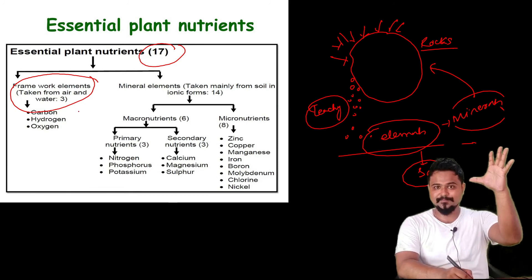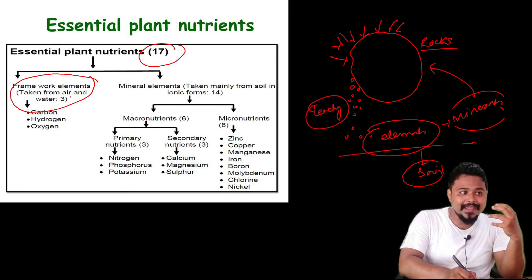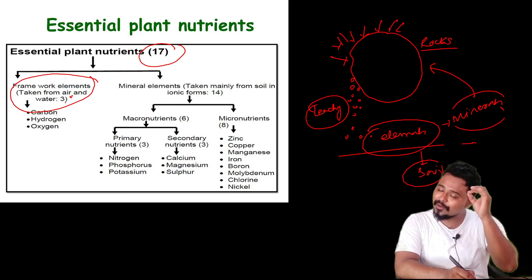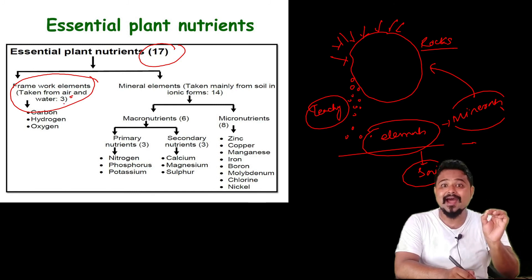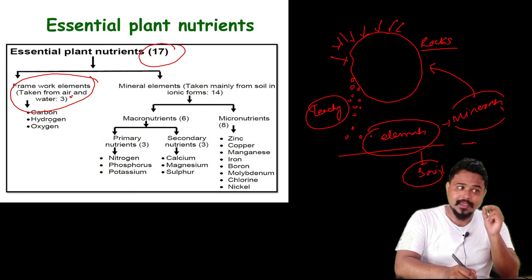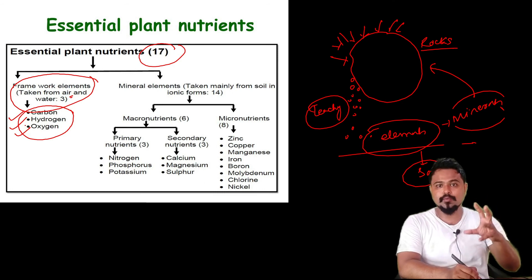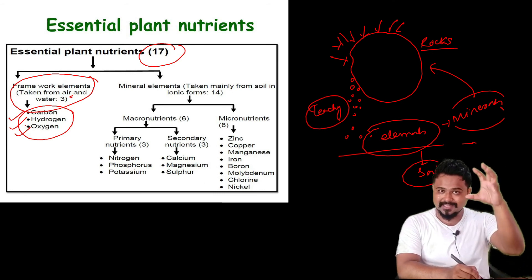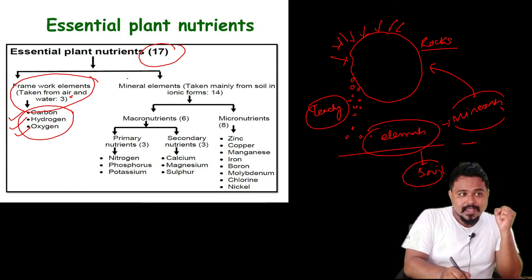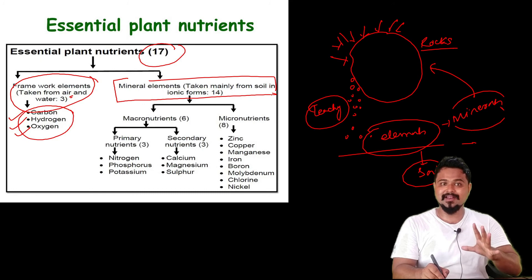We have three non-mineral elements: carbon, hydrogen and oxygen. In addition, we have 14 different mineral elements, making a total of 17 essential elements.